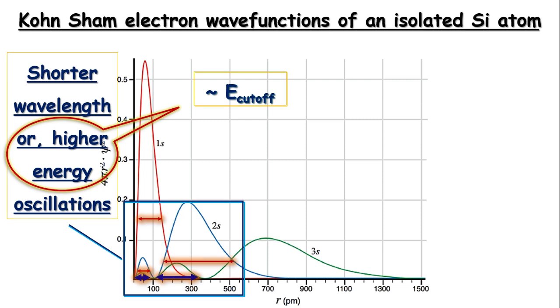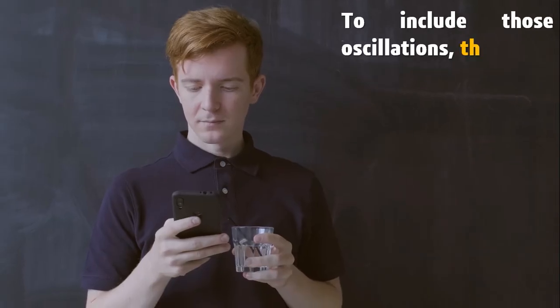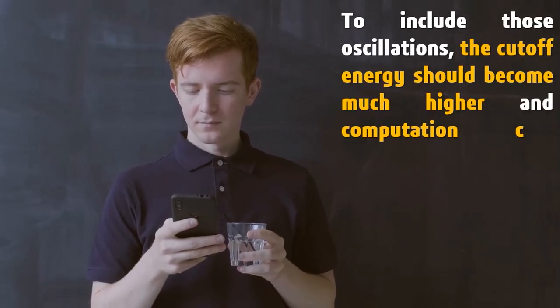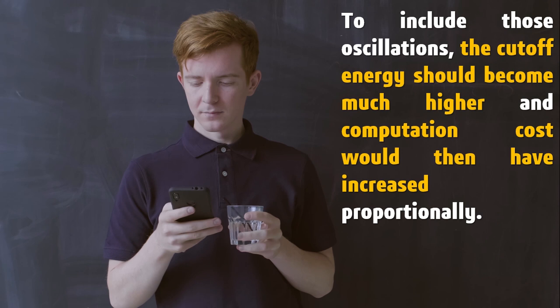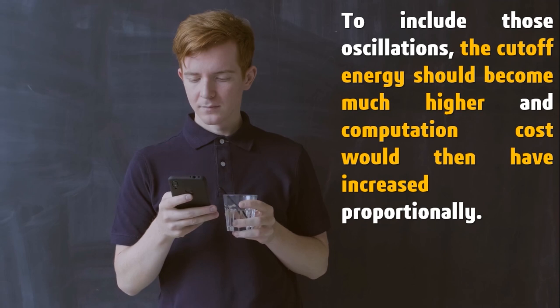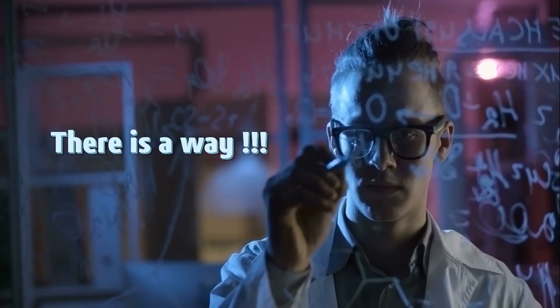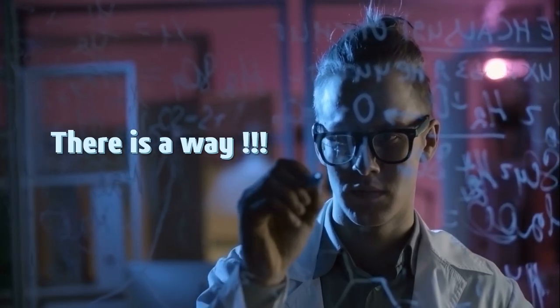Hence the chance of getting error increases. To include those oscillations, the cutoff energy should become much higher, and definitely the computation cost would then have increased proportionally. Obviously scientists have developed tricks to bypass this particular problem, and the method to do so is called the pseudopotential method.